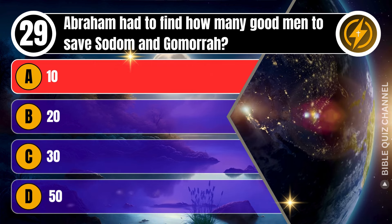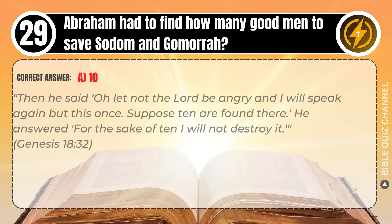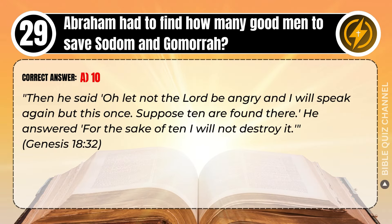Correct answer: A. 10. Explaining the Bible — Then he said, 'O let not the Lord be angry, and I will speak again but this once. Suppose 10 are found there.' He answered, 'For the sake of 10, I will not destroy it.' Genesis, chapter 18, verse 32.